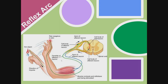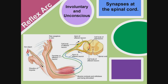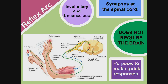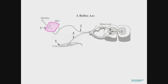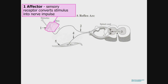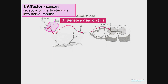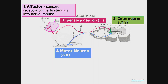The reflex arc: information coming into the spinal cord and going out quickly is involuntary and unconscious. It synapses at the spinal cord, does not require the brain, and the purpose is to make quick responses. There are five parts to the reflex arc. First is the receptor or sensory receptor, which converts a stimulus into nerve impulses. The sensory neuron carries information into the central nervous system. The interneuron carries it from the sensory neuron to the motor neuron, which carries it to the effector — the muscle or gland that responds.